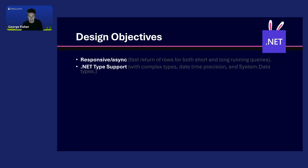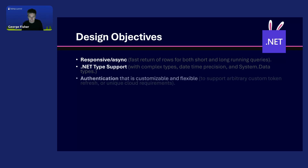.NET type support had to be really thorough — all the complex types — so you don't have to do any conversion yourself. Date-time precision support, because that really mattered to us. System data types like DataTable. Authentication flexibility is really important in clients. Azure has specific authentication requirements which are different from the other clouds, and sometimes teams have different dependencies on different versions of libraries in .NET. So authentication flexibility is really important. As I mentioned, ADO.NET implementation, which is somewhat well defined in some places and not others, so we had to do a thorough job that's compatible with everything that expects those interfaces.